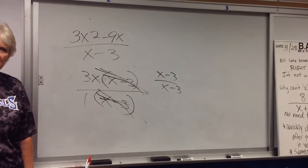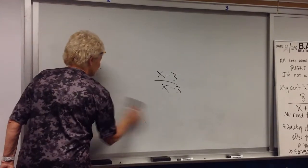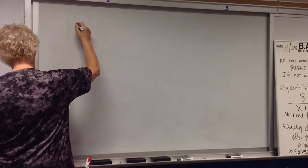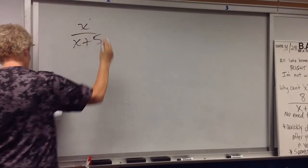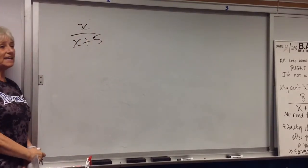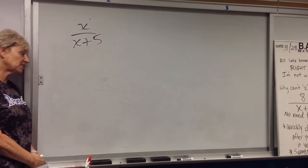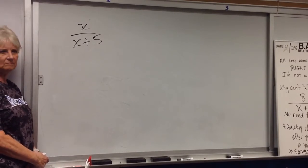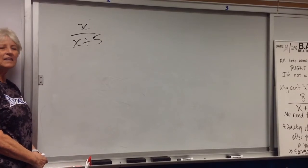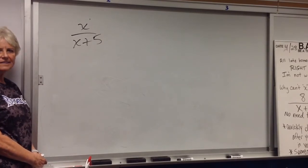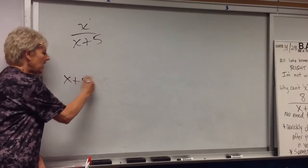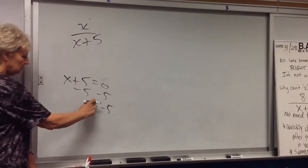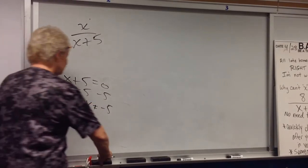Let's do x over x plus 5. So many kids will reduce this. It's sum. It can't be simplified. What can x not be? Negative 5. Common error. Just not thinking. x plus 5 equals 0. Can't be negative 5. x cannot be negative 5.